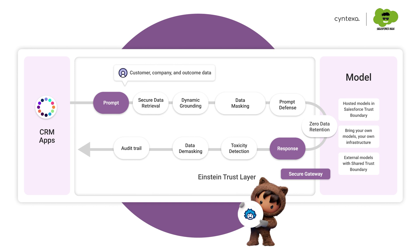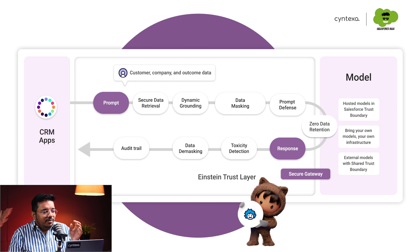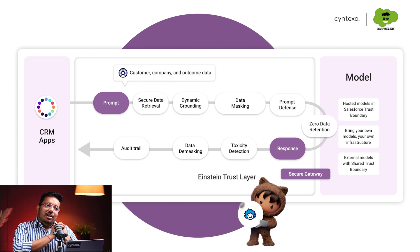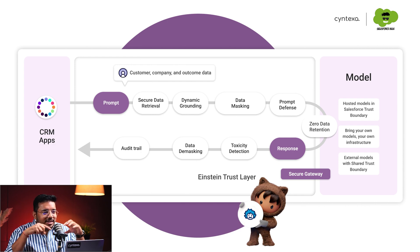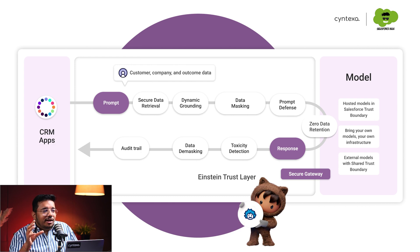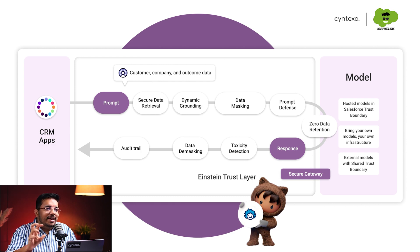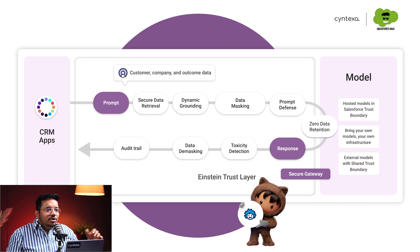When you type in any query or any action that you want to take, what will happen is the prompt will be there, it will get the data that it needs, it will make sure the data it is providing is from that context only which is needed, then it will do data masking. So your data about Henry will not be sent over to the AI as Henry who lives in New York, who is an IT engineer. So that data will be masked.